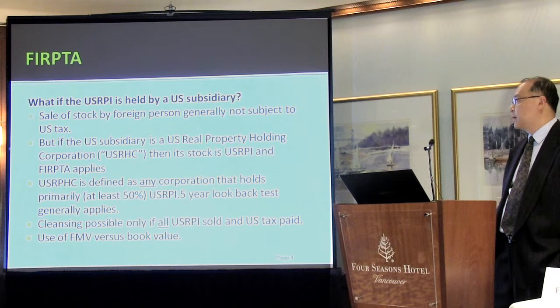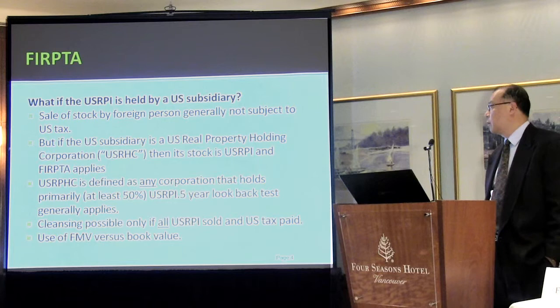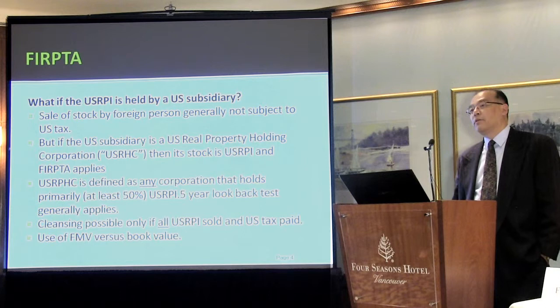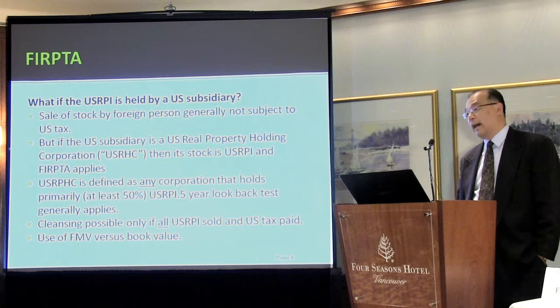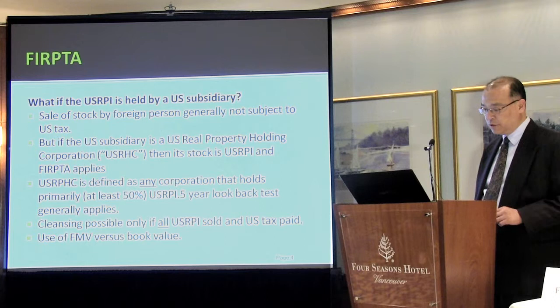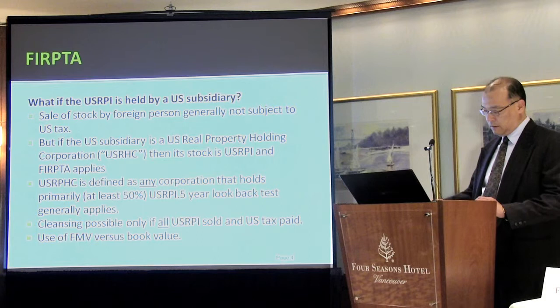The whole purpose is to make sure that Uncle Sam gets his fair share when a foreign person has a gain from the sale of U.S. real property. Also note that how you make the 50% determination is usually done on a fair market value basis, but there is a presumption that if 25% or less of your book value is in the form of U.S. real property, you're presumed to not have been a U.S. real property holding corporation. Those tests are generally done at year end.